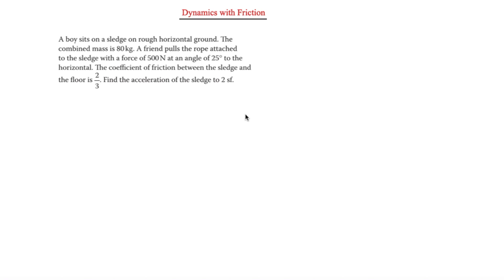The first question is that a boy sits on a sledge on rough horizontal ground. The combined mass is 80 kilograms, and a friend pulls the rope attached to the sledge with a force of 500 newtons at an angle of 25 degrees to the horizontal. We'll draw that first before we start looking at friction.